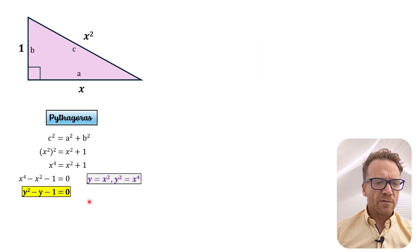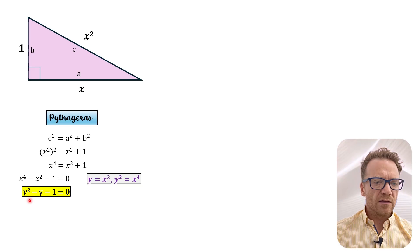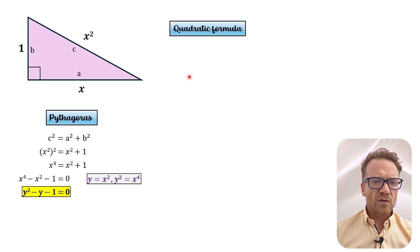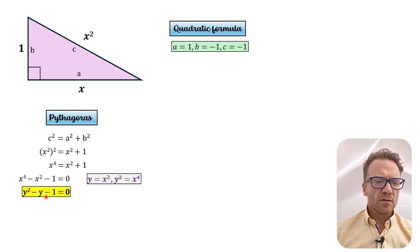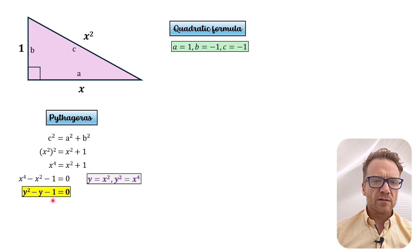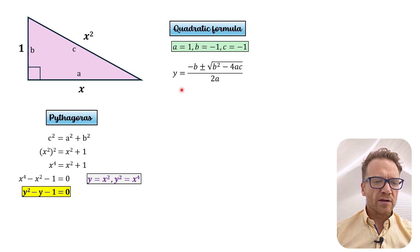Okay so now that we have the quadratic here we can use a quadratic formula. So where a is 1, b is negative 1 and c is the constant term negative 1. And now we can find out a value for y by substituting the values in.